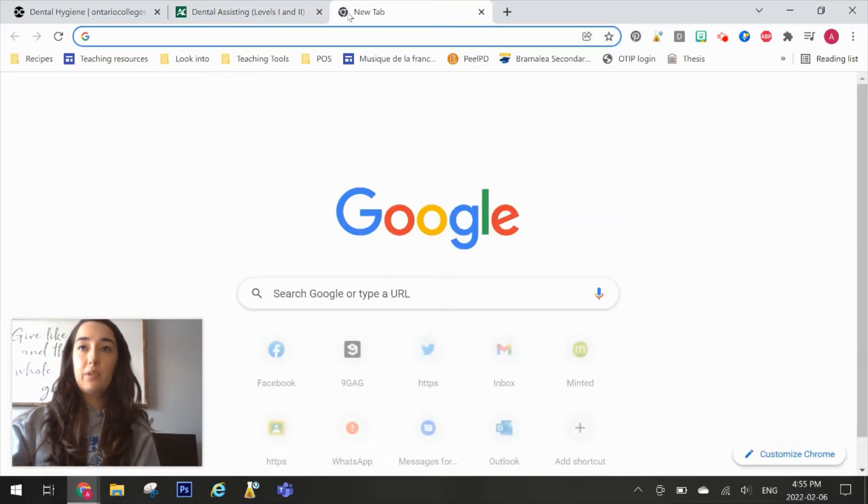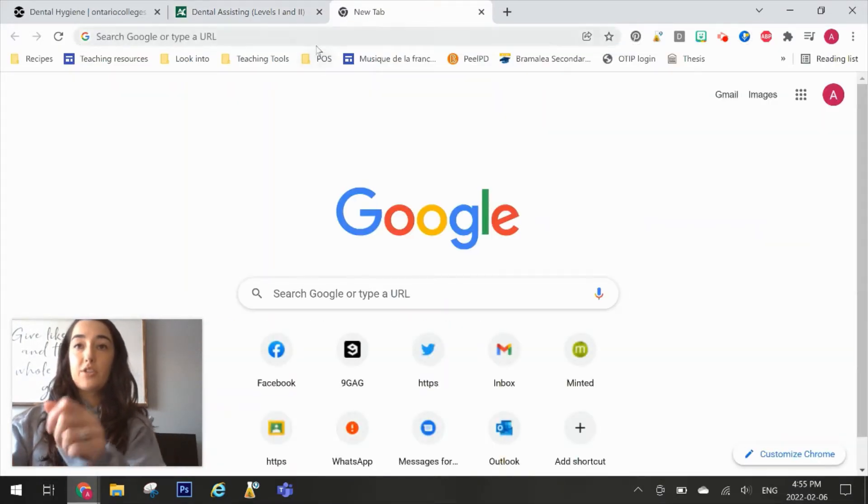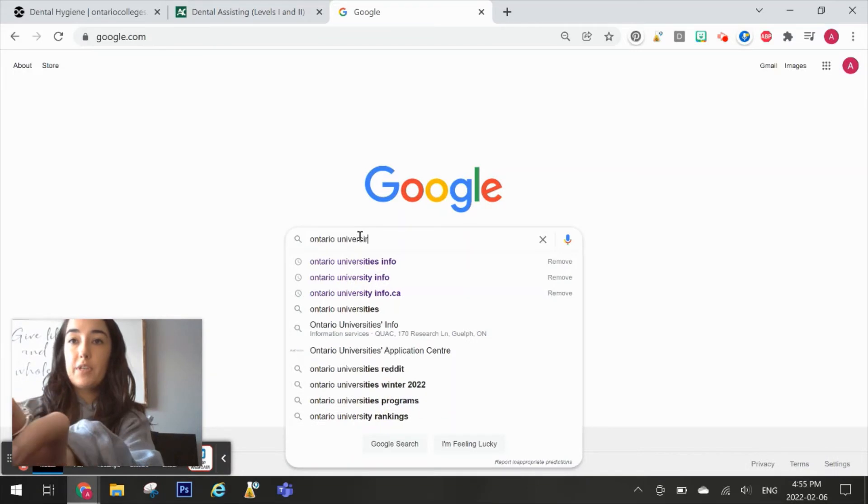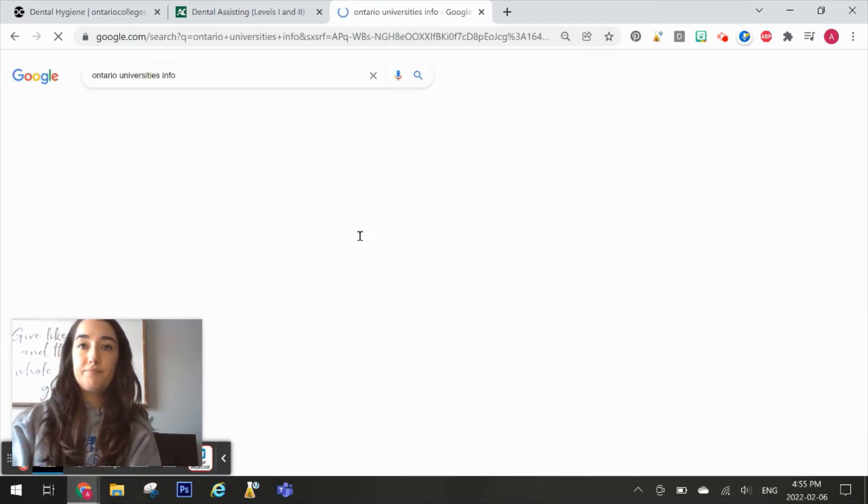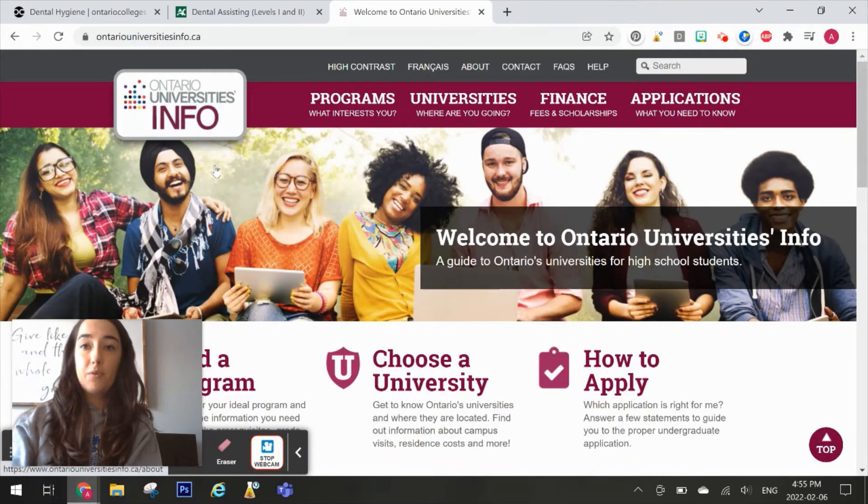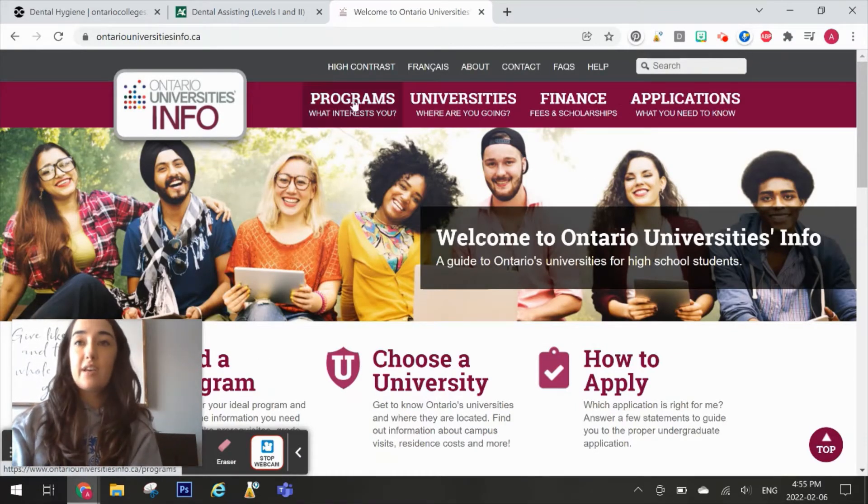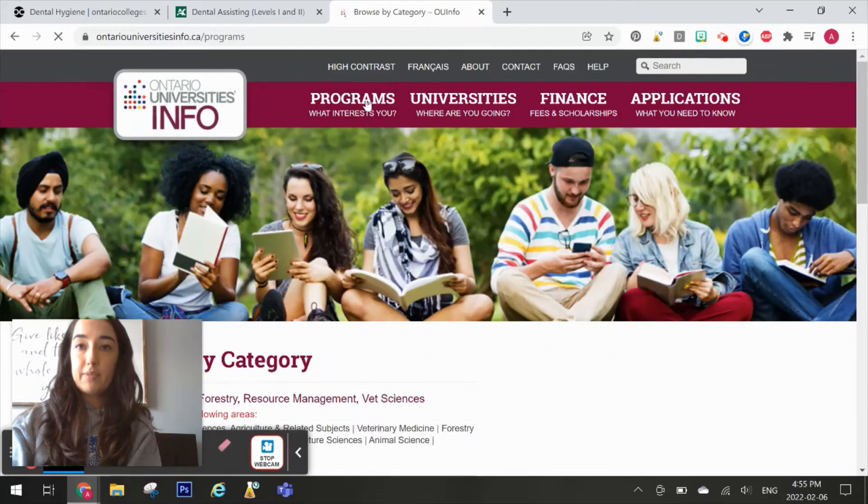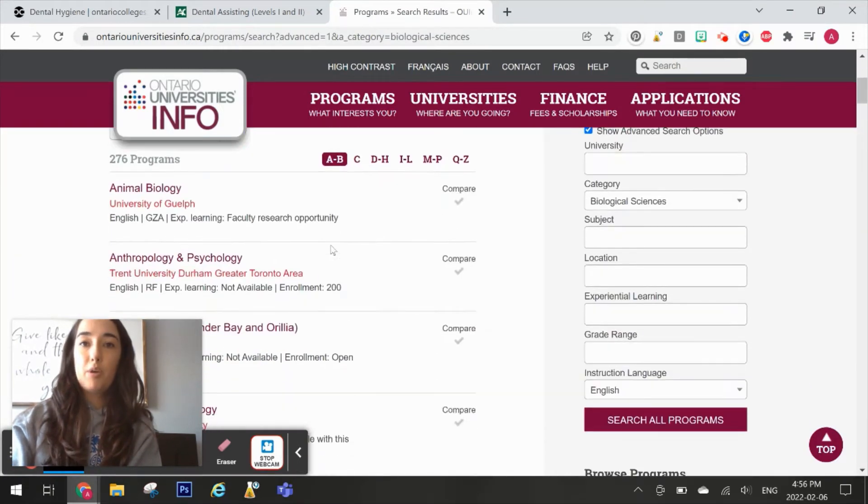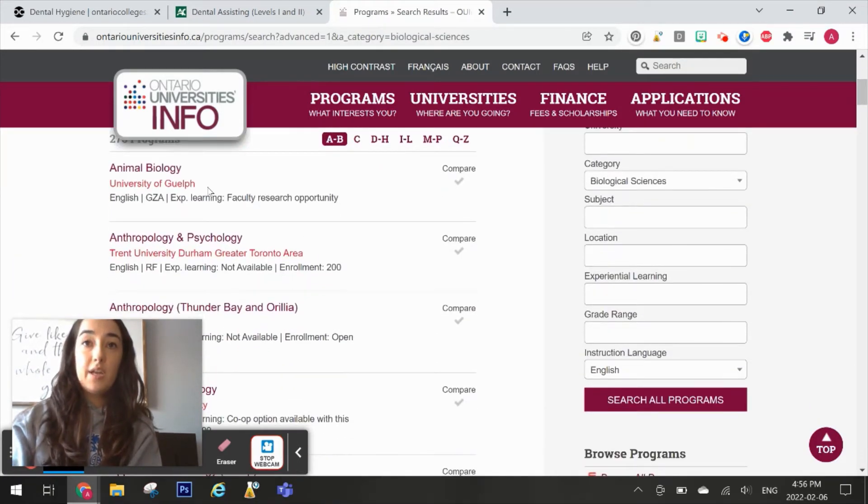Let me show you what the university one looks like. Again, I just go to Google and I type in the search bar Ontario Universities Info. The first website that pops up is the one that you want, OntarioUniversitiesInfo.ca. This does the exact same thing. I click on the programs that I'm interested in, browse by category, let's say biological science, and I can pick a program that I'm interested in—animal biology at Guelph, that sounds pretty cool.